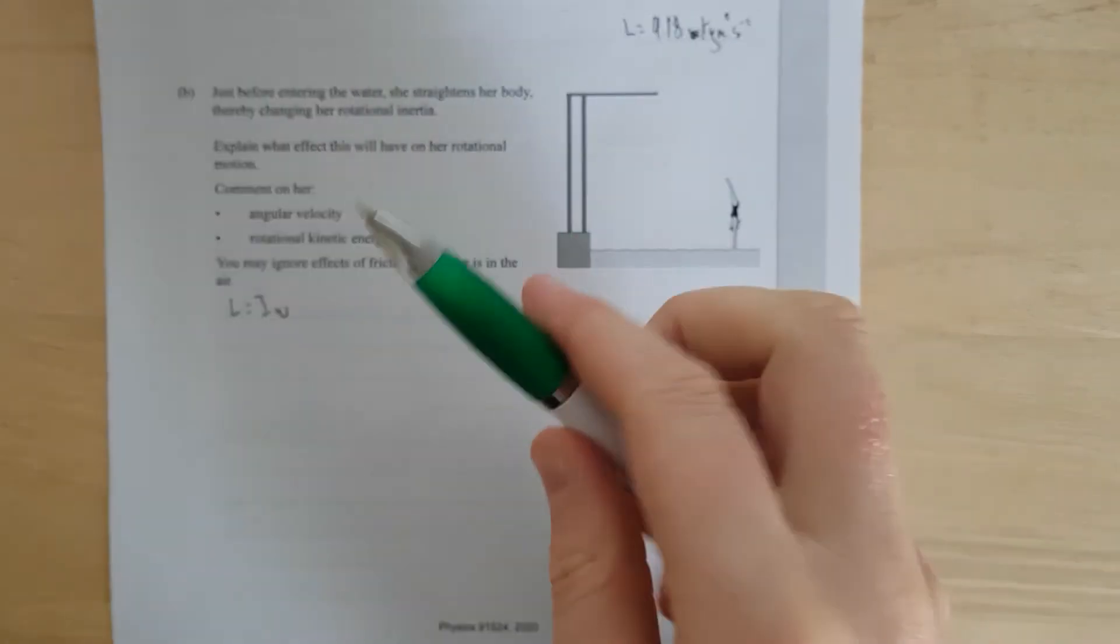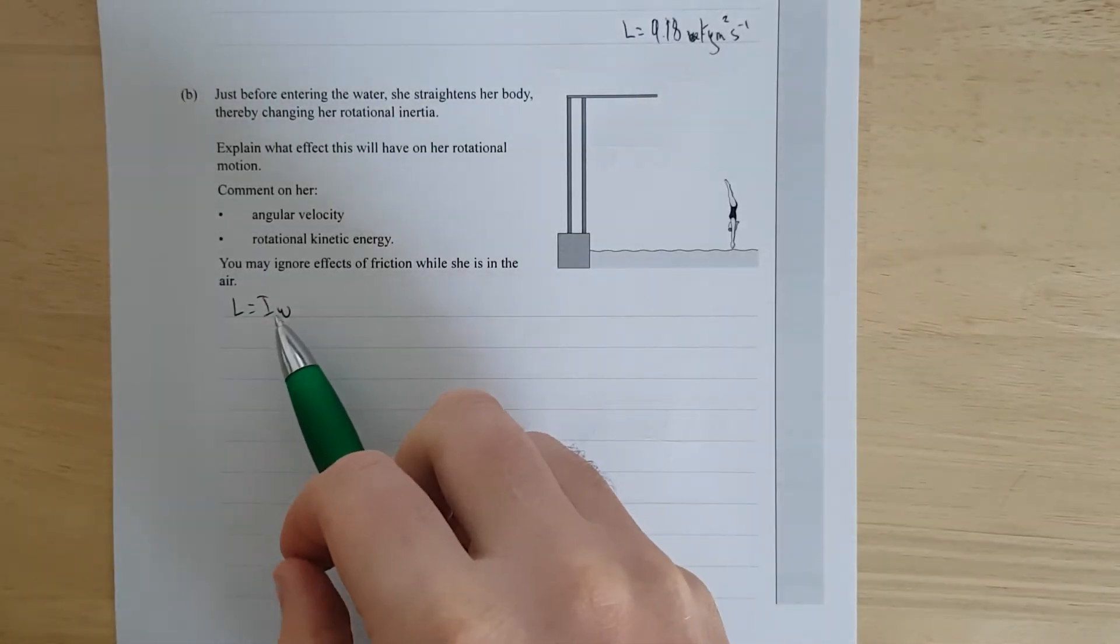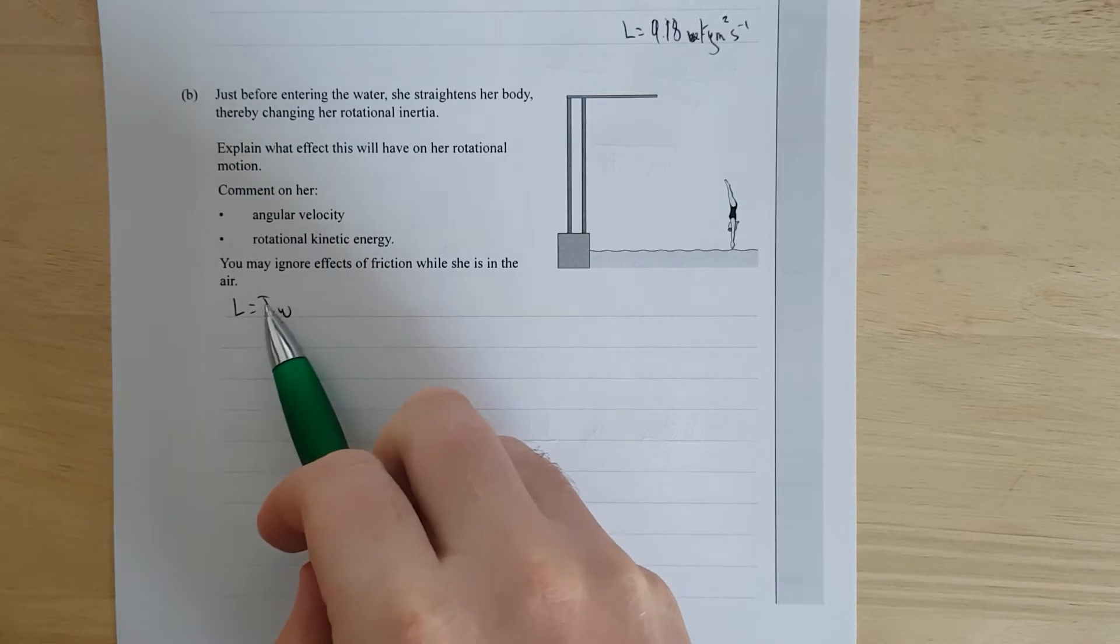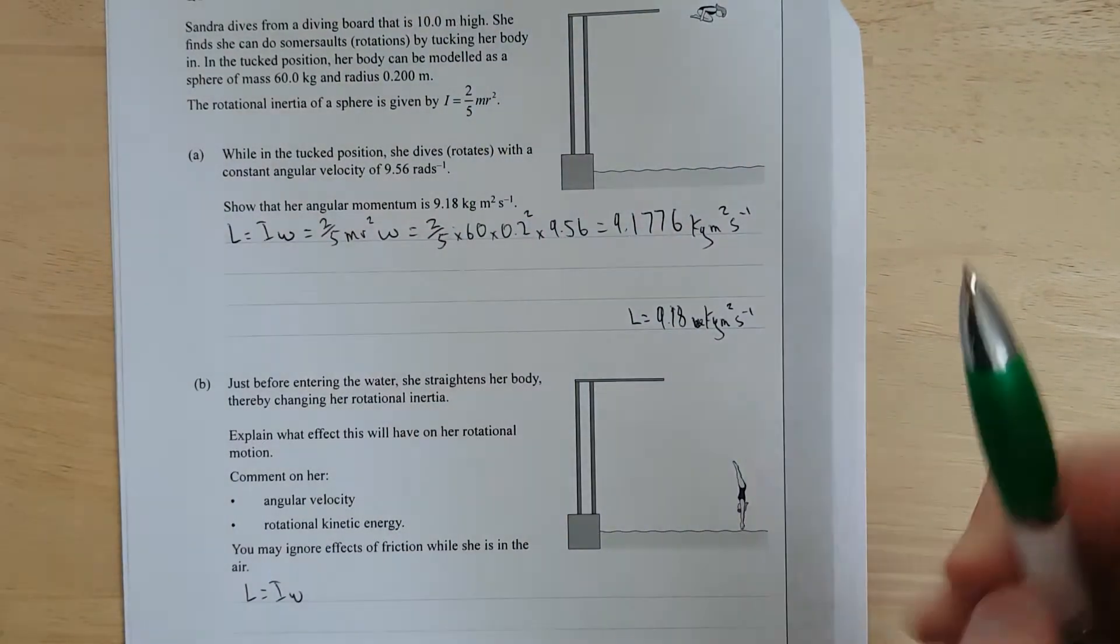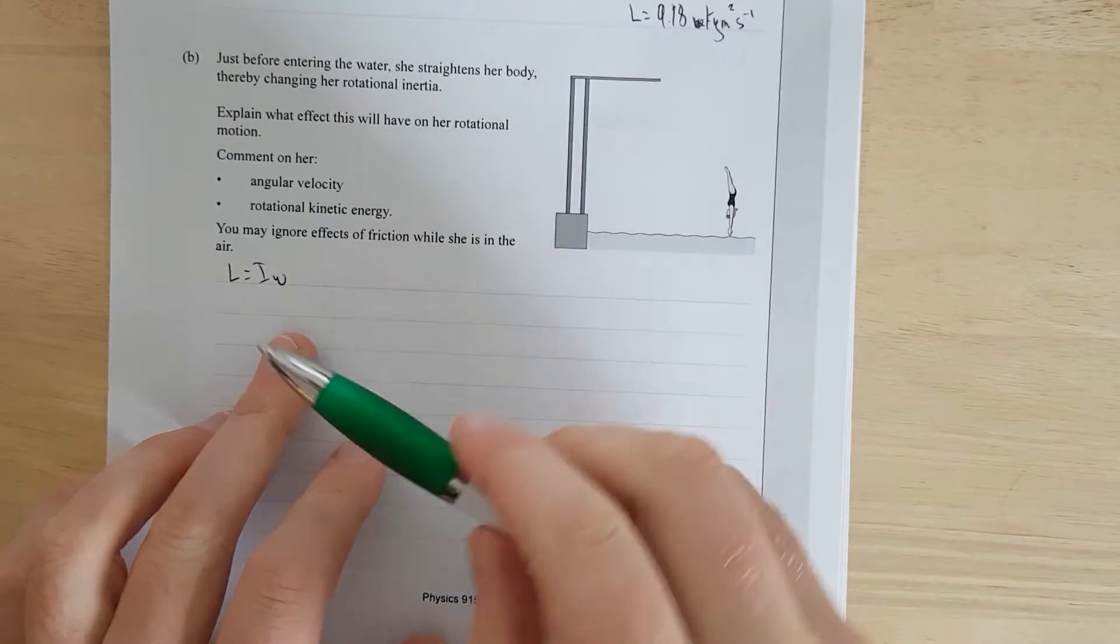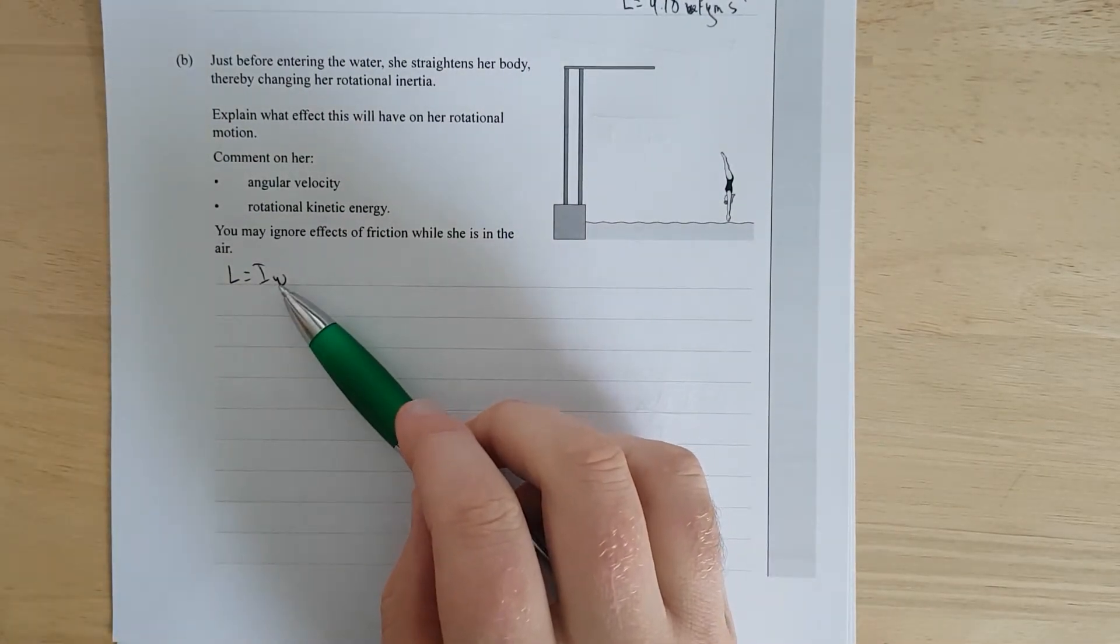The two formulas that you probably want to have are L equals I omega. So when we do this, we're going to have to say that angular momentum's conserved because there's no external torque. It's got to have that little caveat in there, which means if angular momentum's conserved, the rotational inertia will increase because she's increasing her radius and not changing her mass. You can see that from the formula up here. That means her angular velocity is going to decrease, and that means her linear velocity is going to decrease as well because she's not going to be spinning as fast.